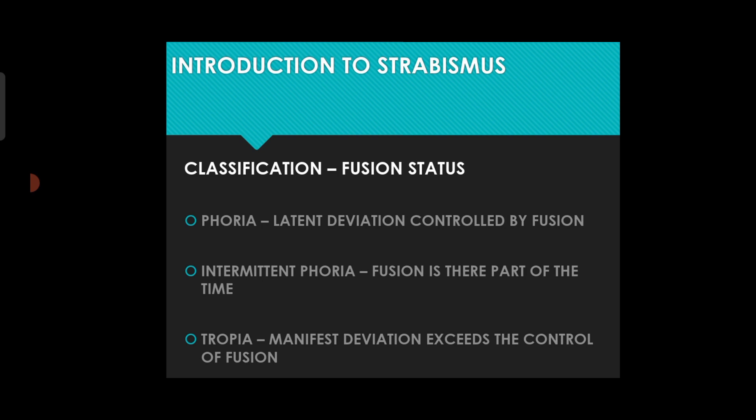Intermittent phoria means fusion is present only part of the time. Tropia means the manifest deviation exceeds the control of fusion — the eyes cannot be controlled to maintain fusion. Tropia is essentially what we observe as a manifest squint, where the eyes appear visibly misaligned.